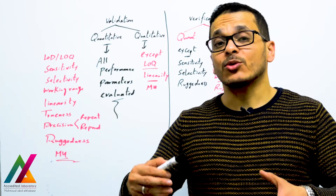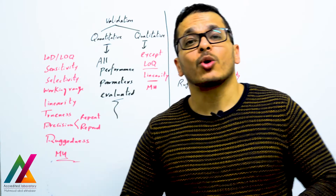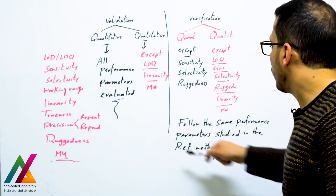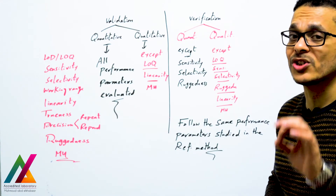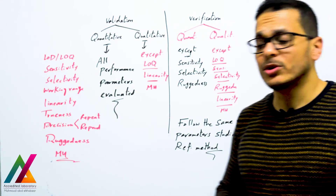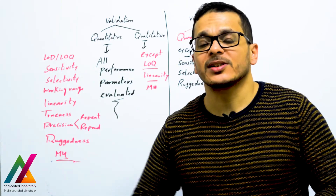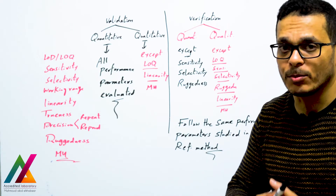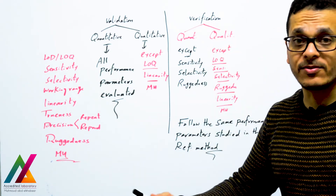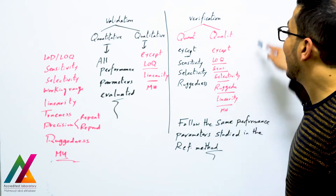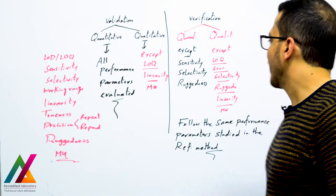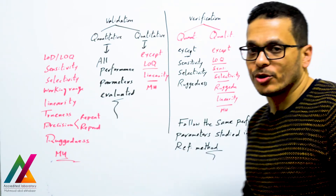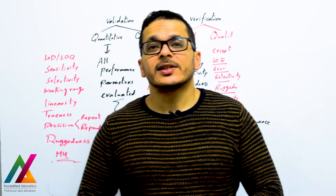It is better to follow the same performance parameters mentioned in the reference method, and if you get the same or close results within acceptable limits, your method is verified. For verification of a qualitative method, you don't need to evaluate LOQ, sensitivity, selectivity, ruggedness, linearity, or measurement uncertainty. This is another very important point in this lecture.